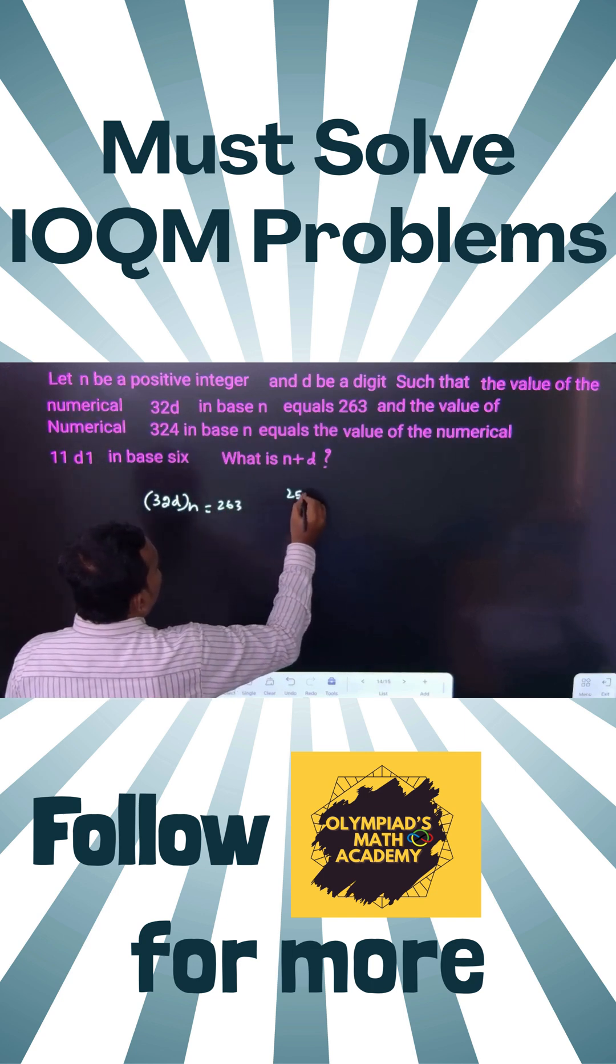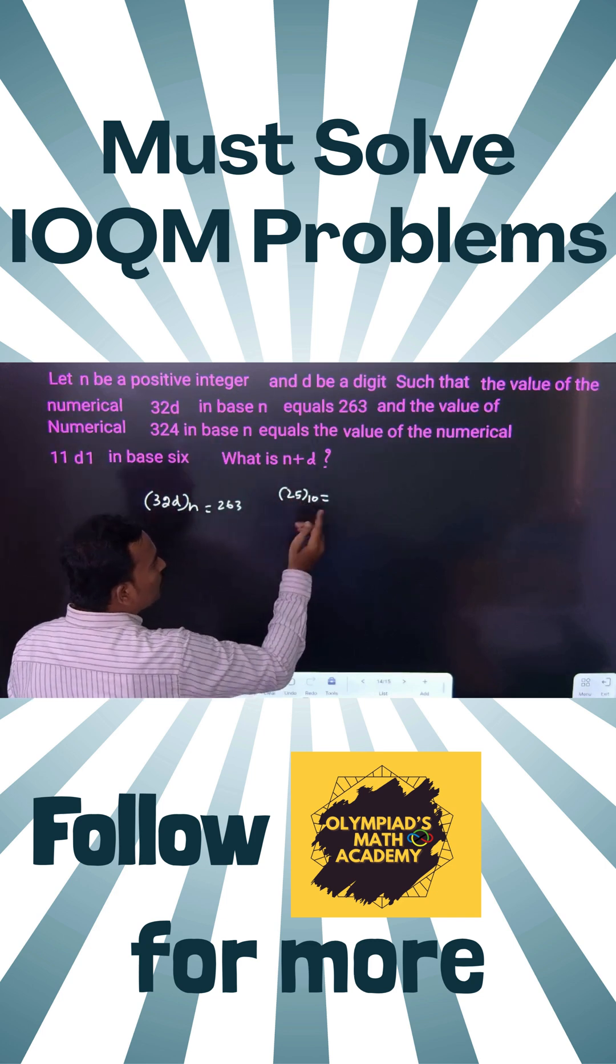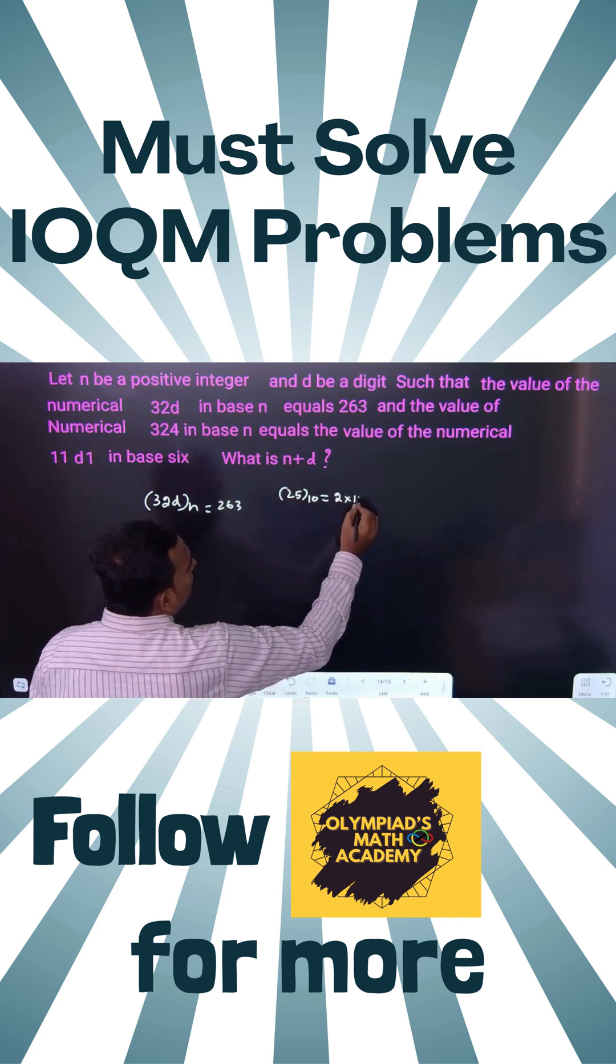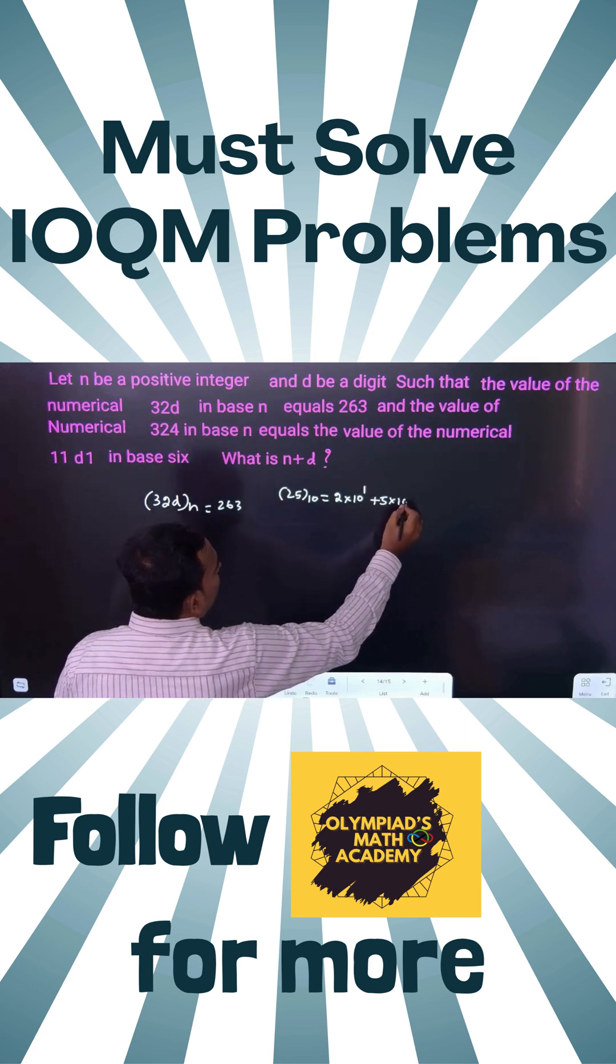Let us take 25 base 10. How to write? Two digits there means you reduce by 1, so 2 times 10 to the power 1, starting from 1, plus 5 times 10 to the power 0.